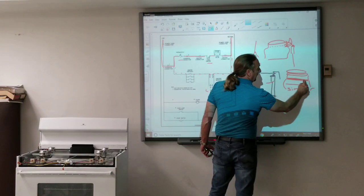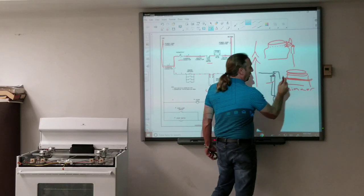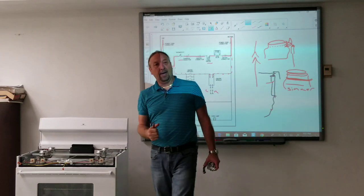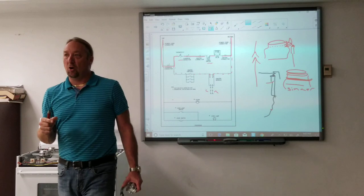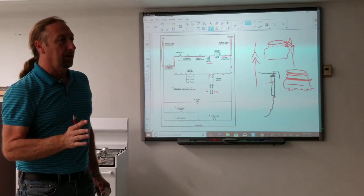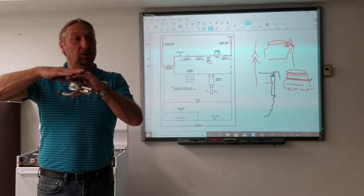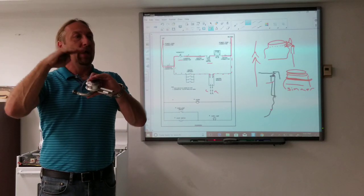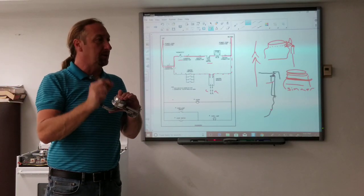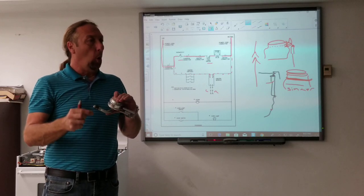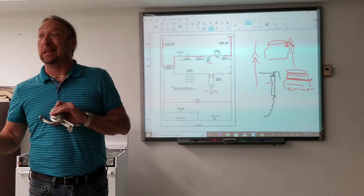We have a simmer flame right here that has a very low flame coming out. That stove, I've run across two or three of them now made by GE. They get grease in between the two pieces of the burner, and the simmer flame is what grounds out the spark or causes a problem with the lighting.